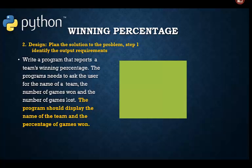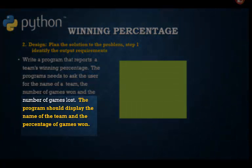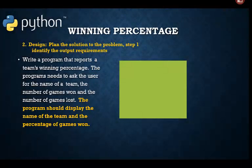The first step in our design phase will be to identify what outputs must be generated by the program. The two required outcomes are: one, report the name of the team, and two, report the team's winning percentage. Let's record those in our output box.